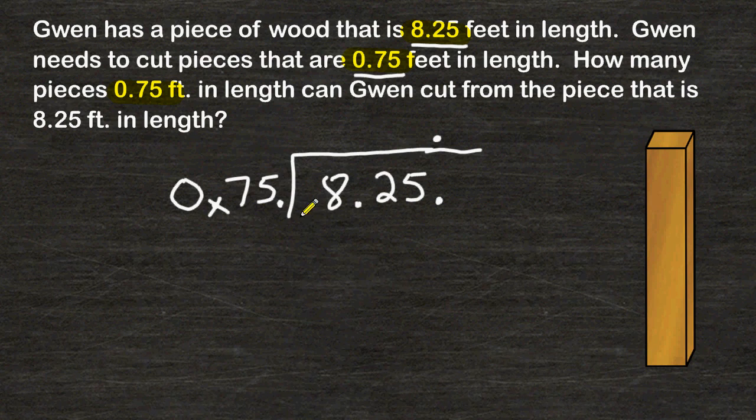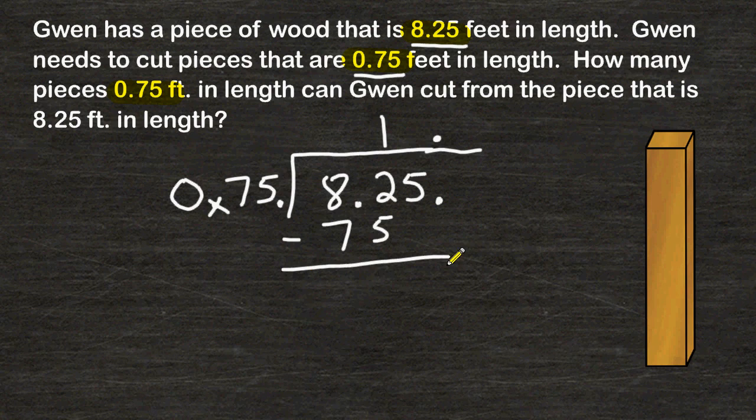75 can be divided into 82 one time. One group of 75 is 75. And the difference between 82 and 75 is 7. Next, we drop the digit down located in the very next place value. So just take this 5 and write it right next to the number 7.